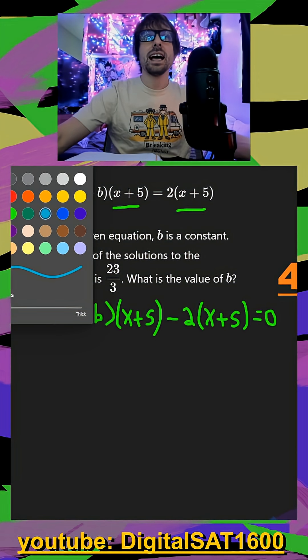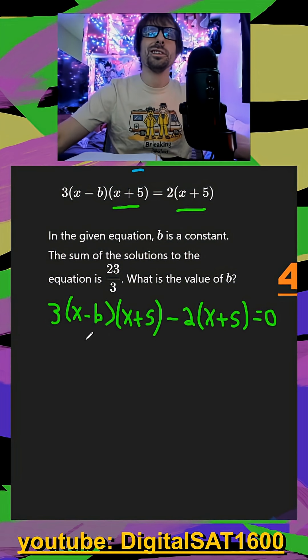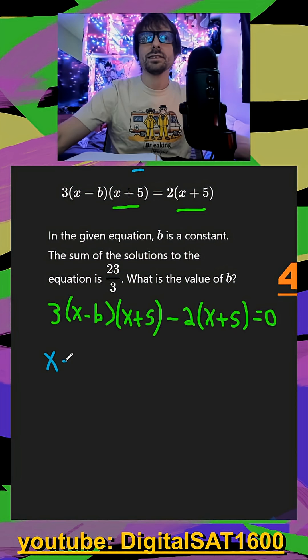Now that they're both on the same side, we can factor it out. This is going to look a little weird, but we're going to try to make it make sense. I'm factoring x plus five out of both terms. So this will be term one, this will be term two. What's left from term one is going to be three times x minus b.